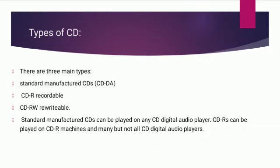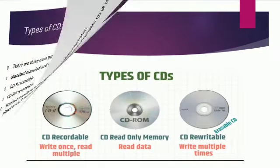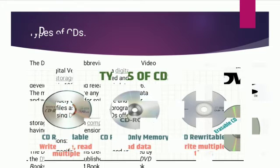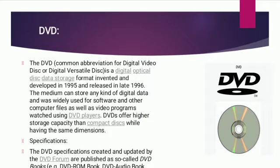There are three main types of CD: standard manufactured CDs, recordable CDs (CD-R), and rewritable CDs (CD-RW). Standard manufactured CDs can be played on any CD digital audio player. CD-Rs can be played on CD recordable machines and many, but not all, CD digital audio players. CD-R is write-once read-multiple; CD-ROM is read-only memory; CD-RW is rewritable and erasable.